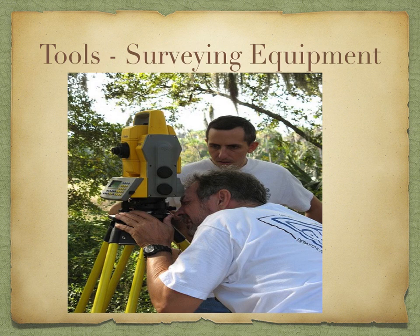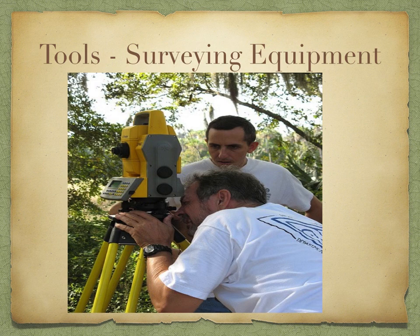The next tool is surveying equipment, which is used to examine the topography of the land — looking for dips, hills, mounds, and different gradients in the landscape. This will become more important in the next lesson when we look at stratigraphy, but for now, just know that surveying equipment is one of the key tools used.